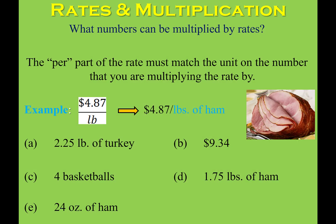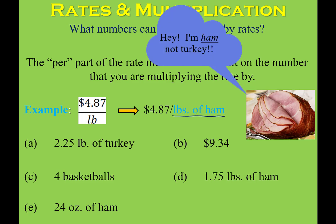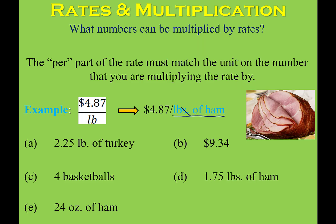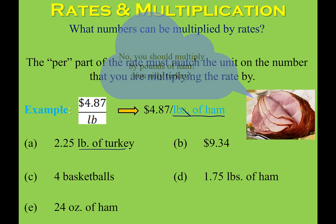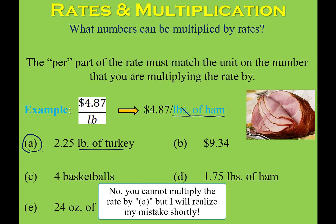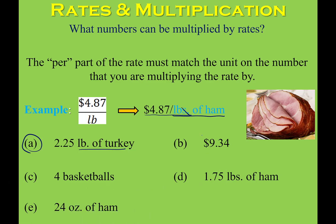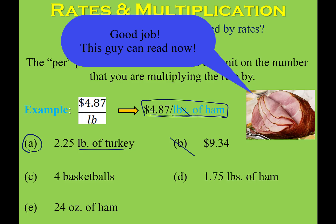Here we have $4.87 per pound of turkey. We're looking for something in pounds. The first option says pounds of turkey — buying two and a quarter pounds — so that would be okay. The second option multiplies dollars per pound times dollars, which gives dollars squared again, so that doesn't make sense. Then we have four basketballs — this is the price of ham, not basketballs, so those units don't match up.